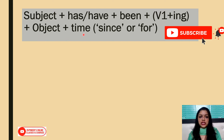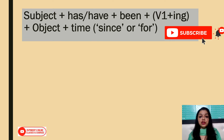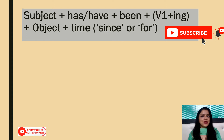Then you have the object and time. To indicate time, we use either 'since' or 'for'. Where to use 'since' and where to use 'for' is very important to understand. Once you understand this, there is not going to be any difficulty.